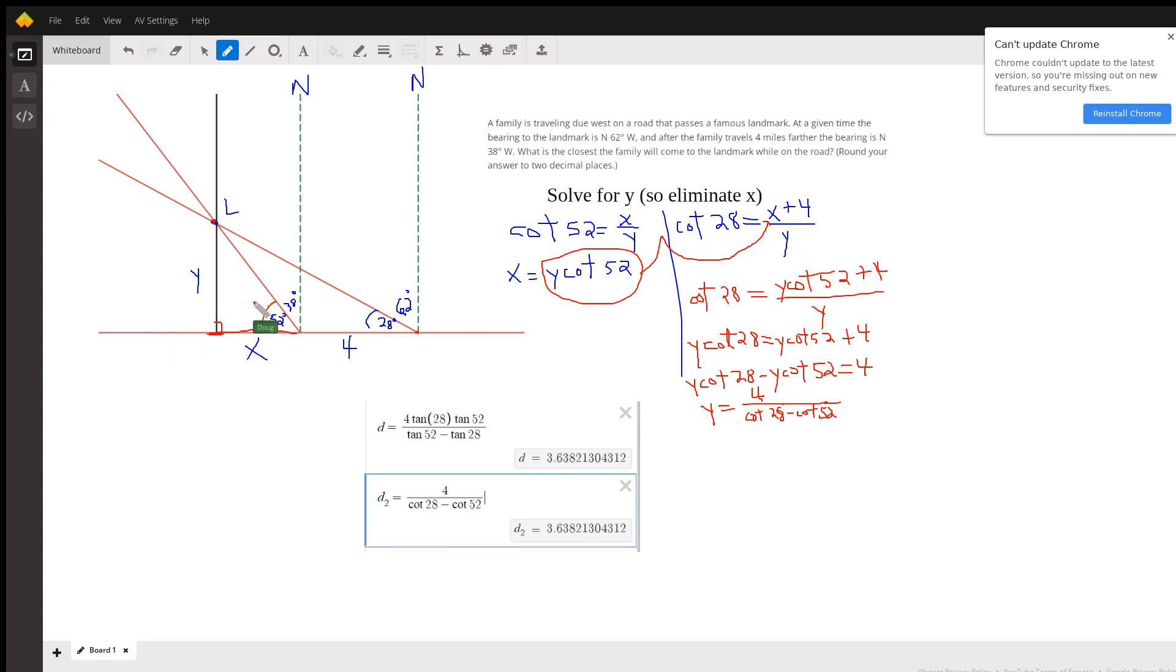The equations look like this: for the angle with the 52 degree acute angle, the cotangent of 52 is x over y. Of course, you could say the tangent of 52 is y over x.